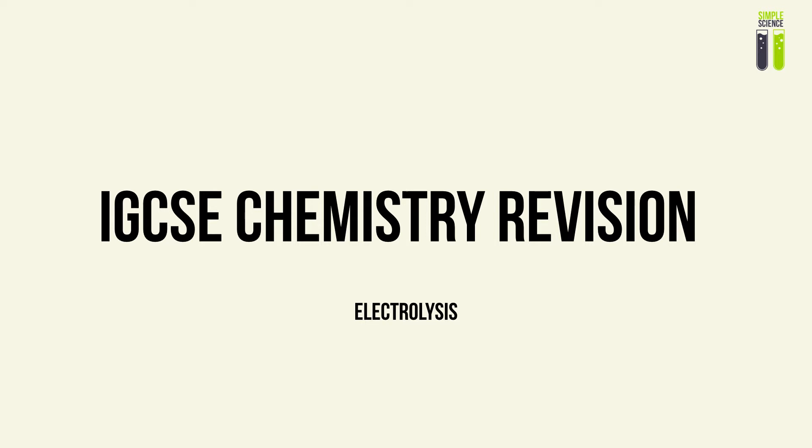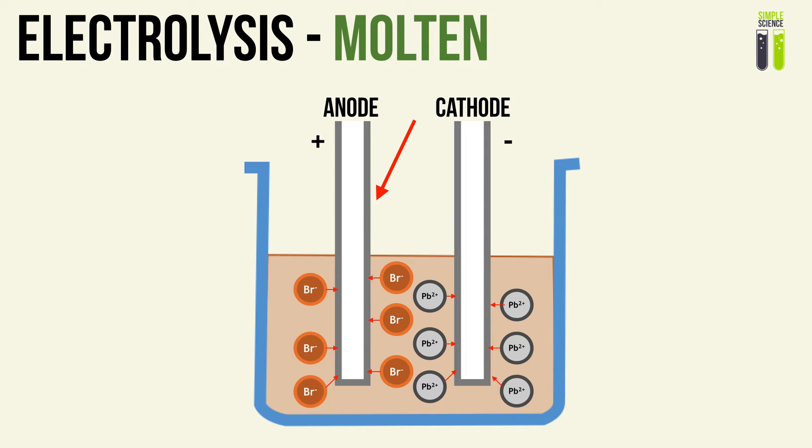This is Part 2 of our IGCSE chemistry revision series on electrolysis. In the Part 1 video, I talked about two ways in which we will look at electrolysis at the IGCSE level. The first way is the electrolysis of molten liquids, such as salt, where we only have two different ions involved.